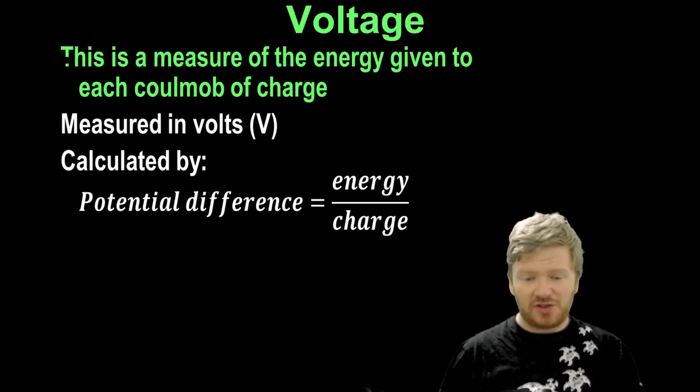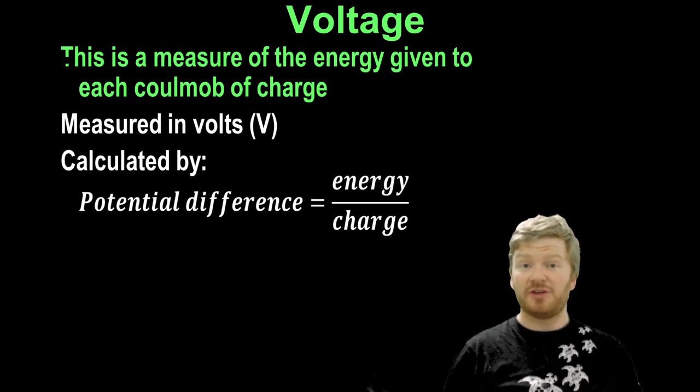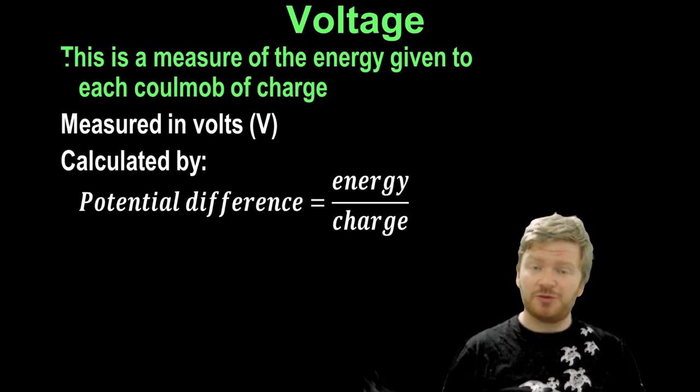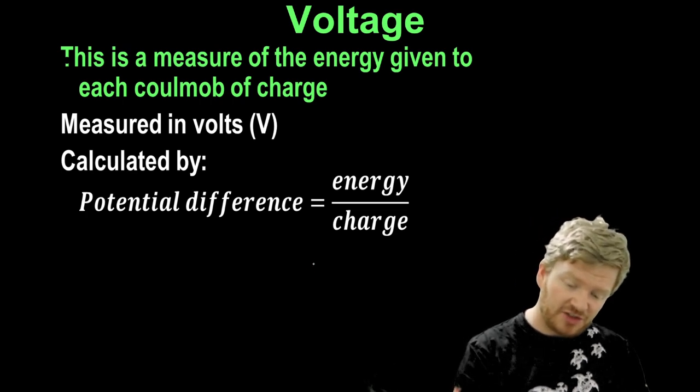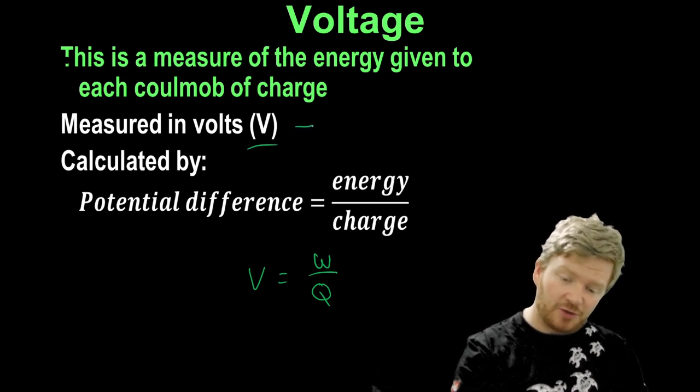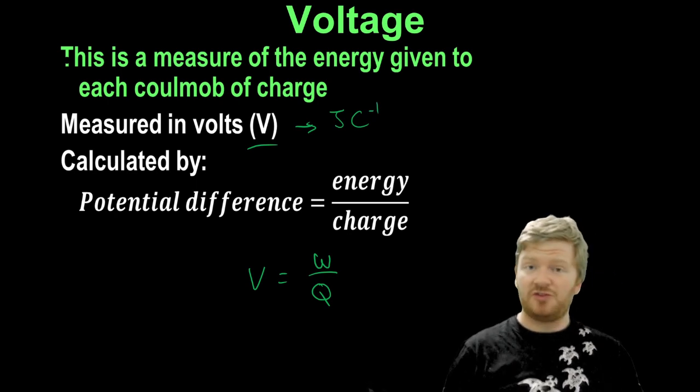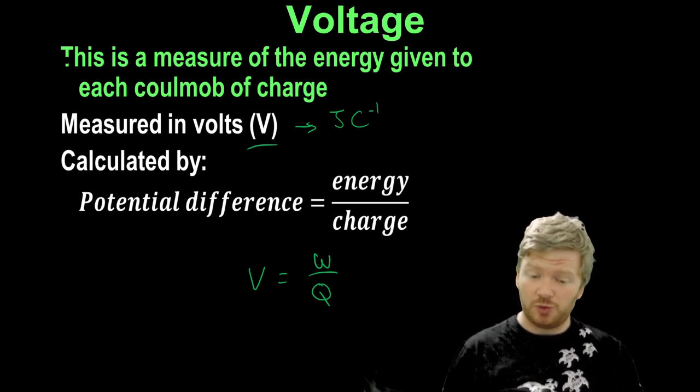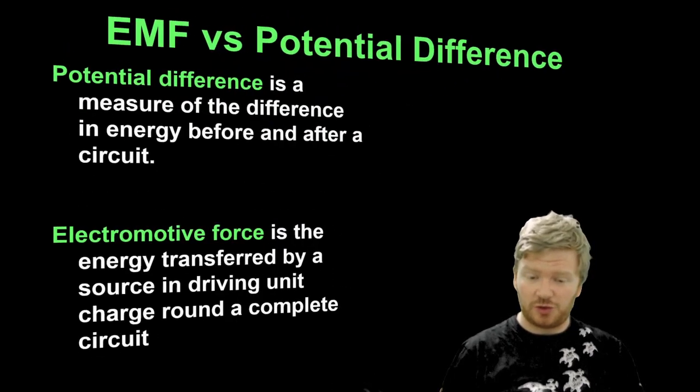So it is more technically a definition of the energy given to each coulomb of charge. It is measured in volts, capital V, and it is calculated as potential difference is energy divided by charge. Or we can write it as work done per unit charge. And you can see it is measured in volts, but you could say that a volt is the same as a joule per coulomb. Because it is the amount of work, which is energy in joules, divided by the amount of charge, which is a coulomb.